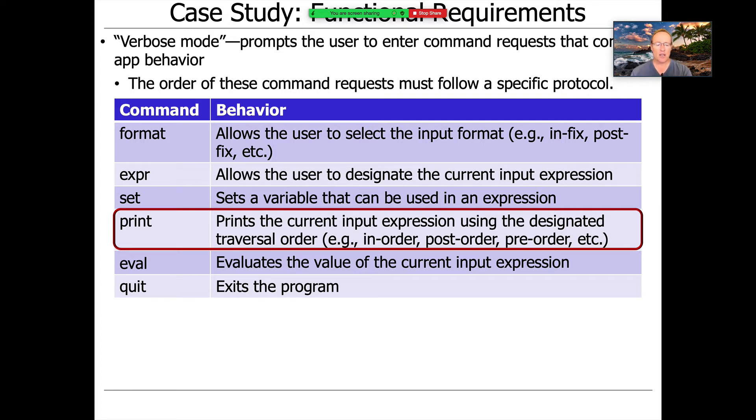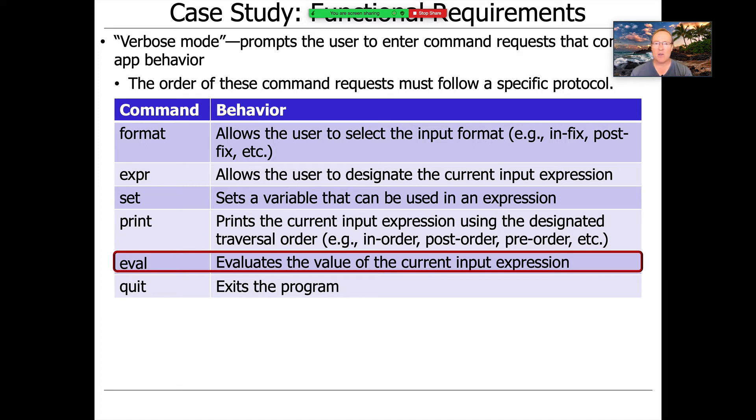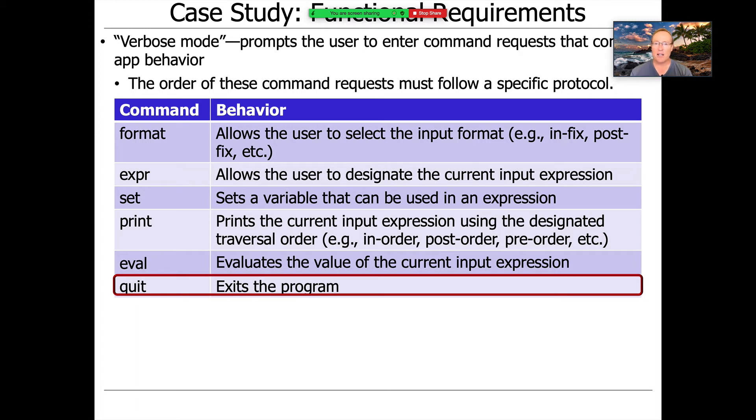And then you can also evaluate the value of the current input expression. So if you made a tree for a certain expression, like minus five times three plus four, you can say, please evaluate what it is. And it'll come back and give you a result in whatever order you ask it to do. And then finally, you can go ahead and quit the program.